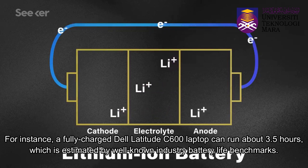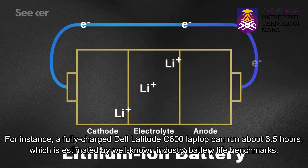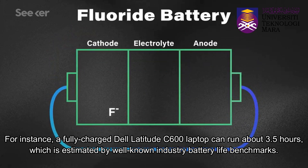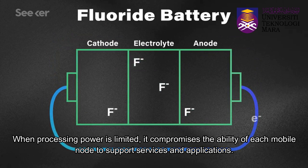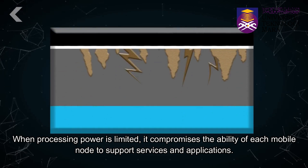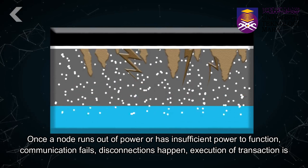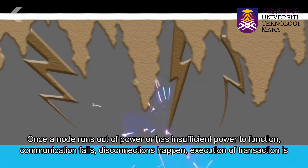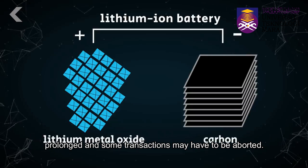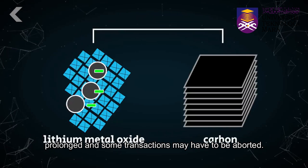For instance, a fully charged Dell Latitude C600 laptop can run about 3.5 hours, as estimated by well-known industry battery life benchmarks. When processing power is limited, it compromises the ability of each mobile node to support services and applications. When power is insufficient, communication fails, disconnections happen, execution of transactions is prolonged, and some transactions may have to be aborted.